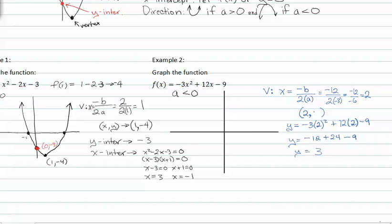So my vertex is (2, 3), so up 3 and over 2. Now I need to find my y-intercept, which I know is -9.